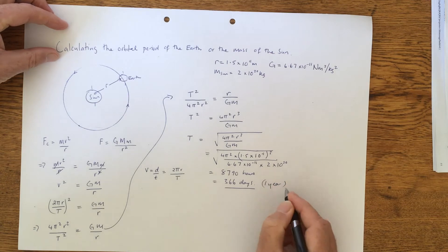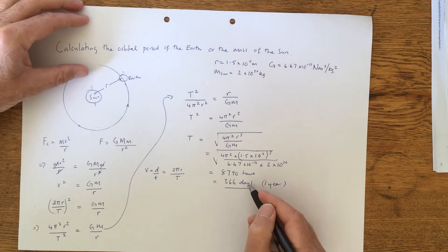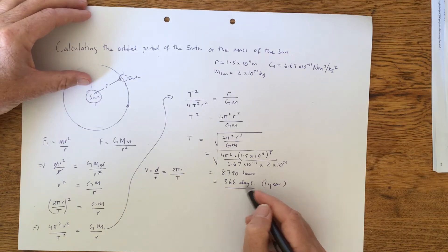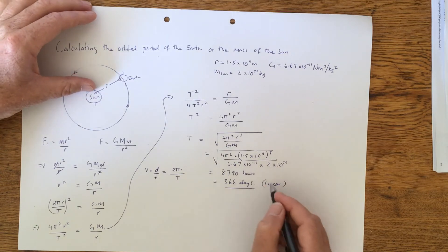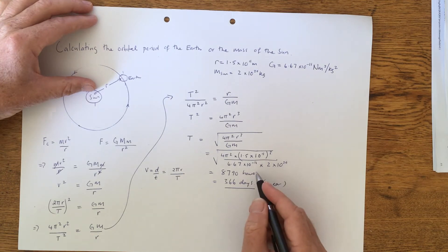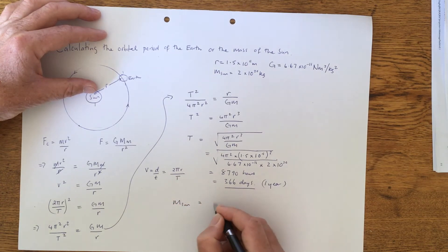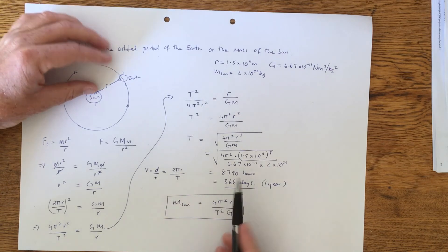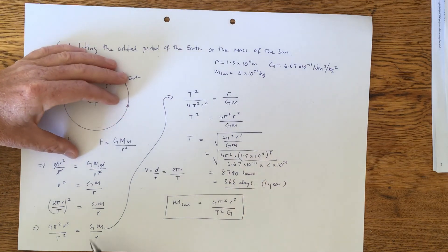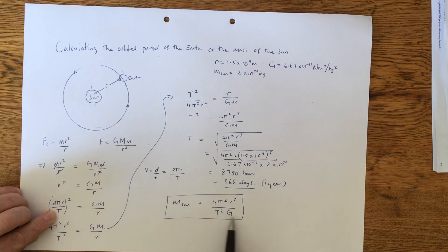In some questions, the opposite is done. Sometimes it's assumed you know the number of days or the number of hours that the period of the Earth is, and they ask you to calculate the mass of the Sun. In this case, we would just rearrange the equation to be 4π²R³ divided by T² divided by G. So this is the equation that you would use. All I'm doing is just rearranging this equation here, making the mass of the Sun the subject.